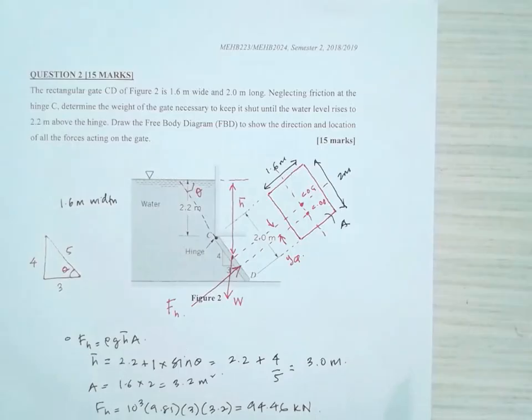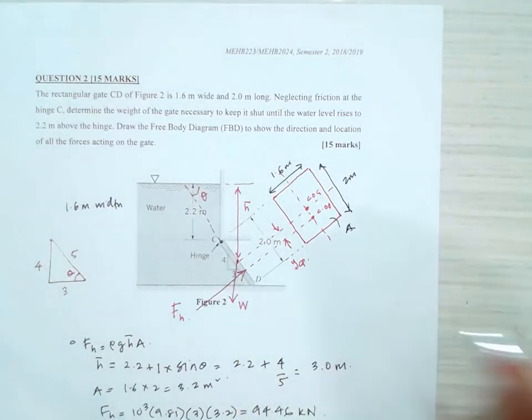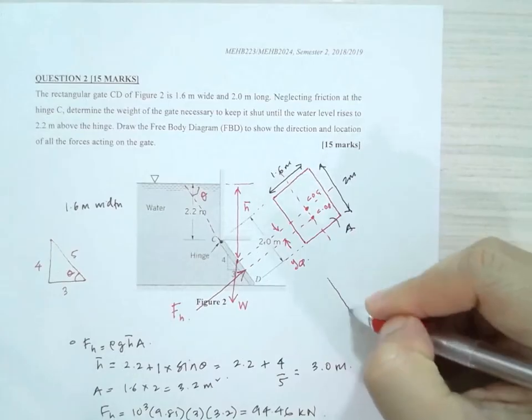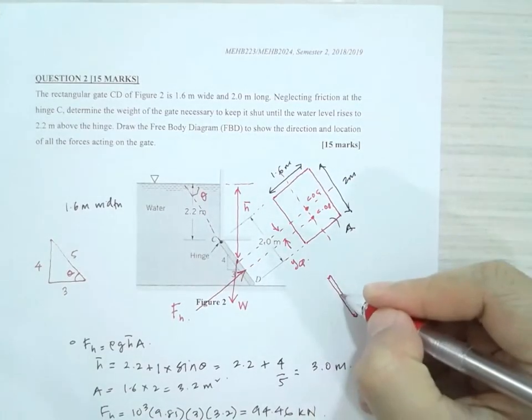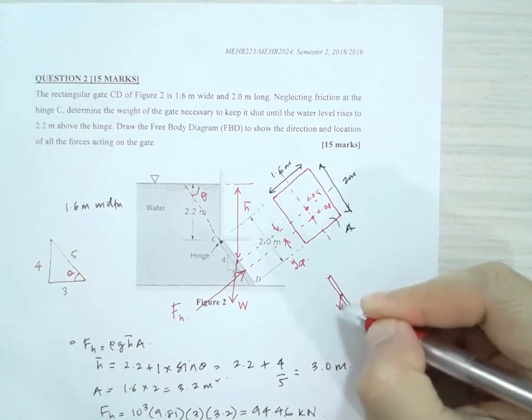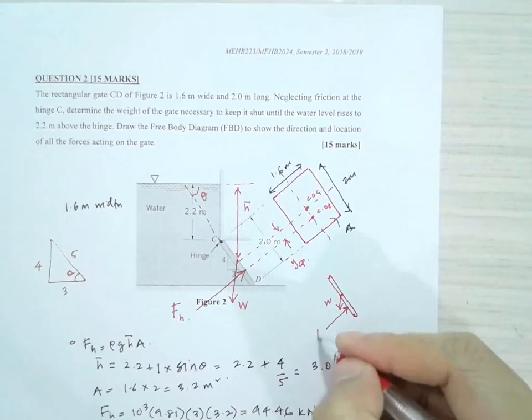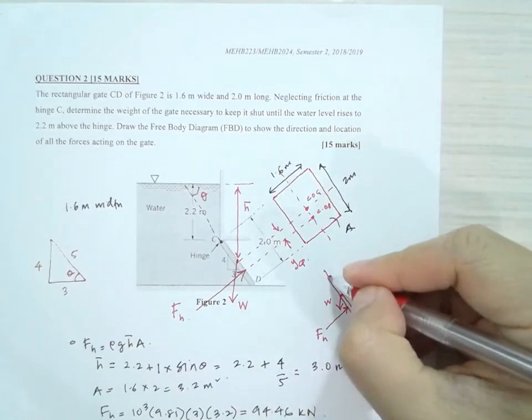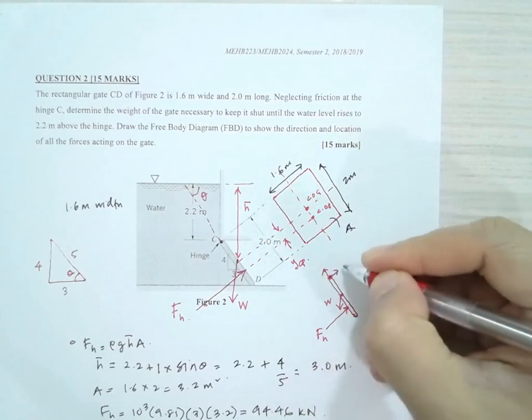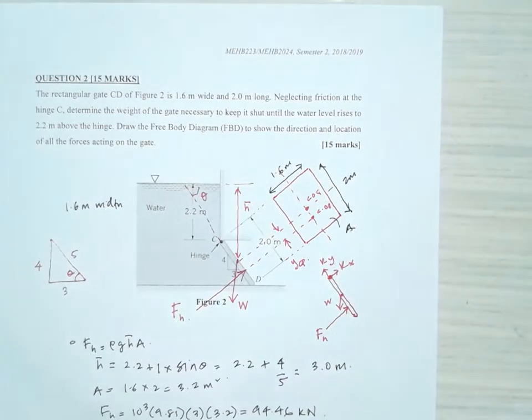The last part asks to draw the free body diagram. We have already identified the two main forces here. We have the weight acting downward, the hydrostatic force acting there, and at the hinge there will be reaction forces. Let's call that R_x and R_y. That will be the free body diagram.